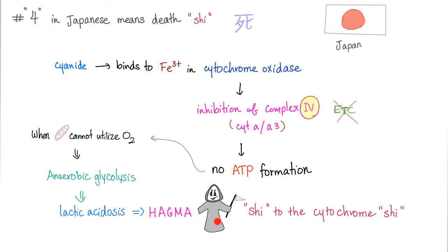Cyanide poisoning causes death to the mitochondria. How to remember the cytochrome 4? 4 in Japanese means death. It sounds like shi. Shi means death and shi means 4 if I know Japanese which I don't. I'm a multilingual guy. Cyanide binds the ferric in the cytochrome oxidase in complex 4.